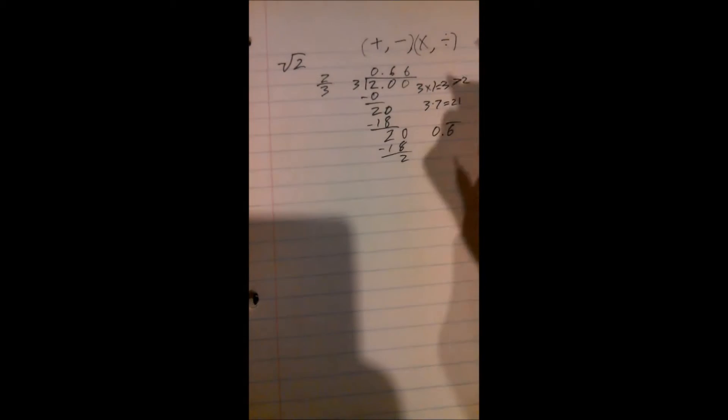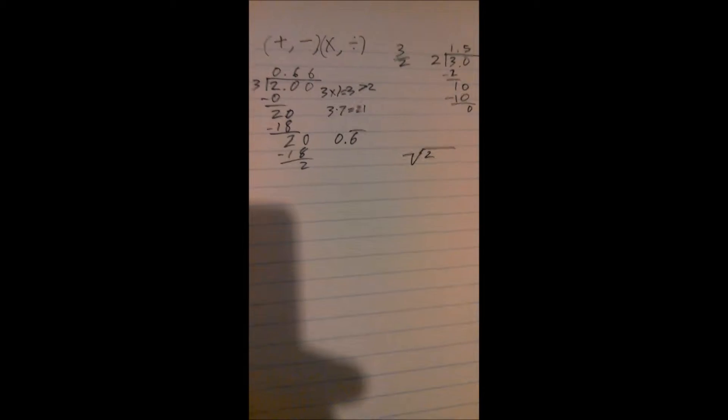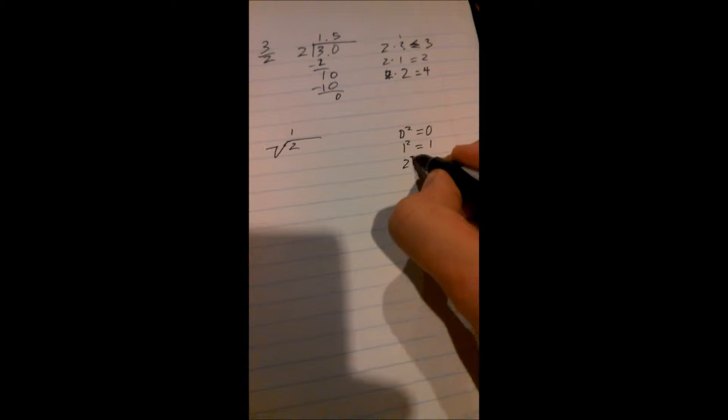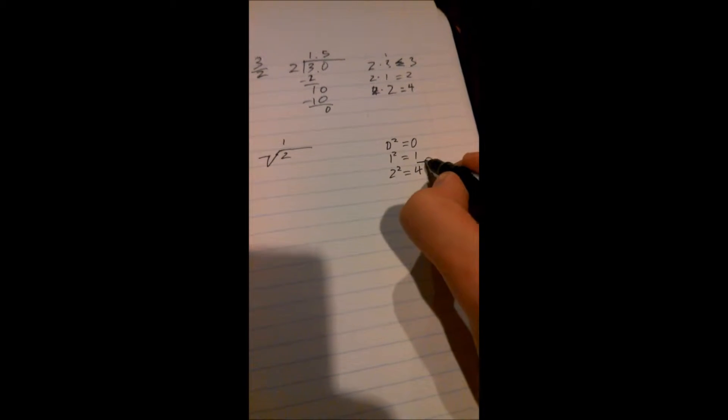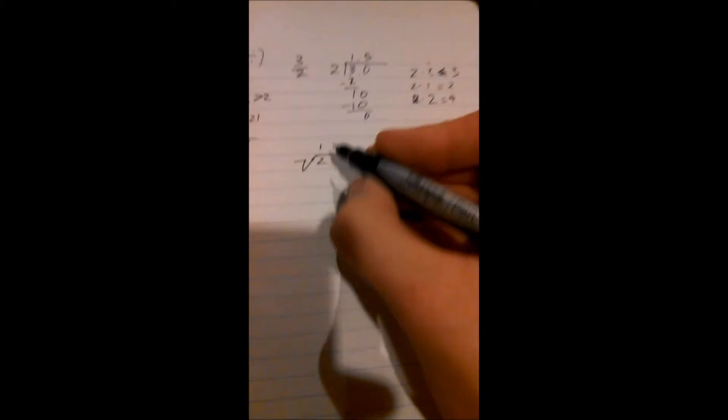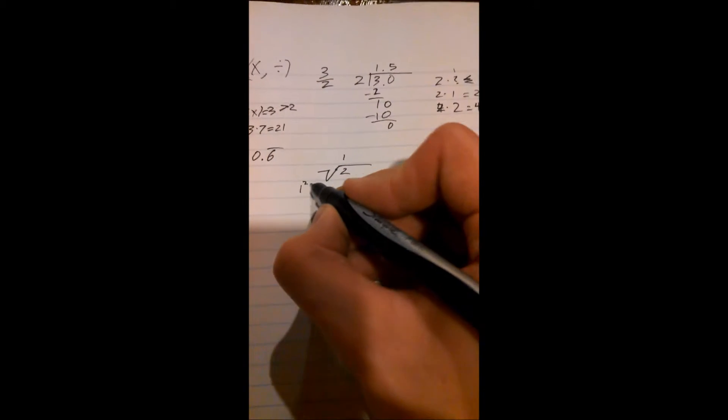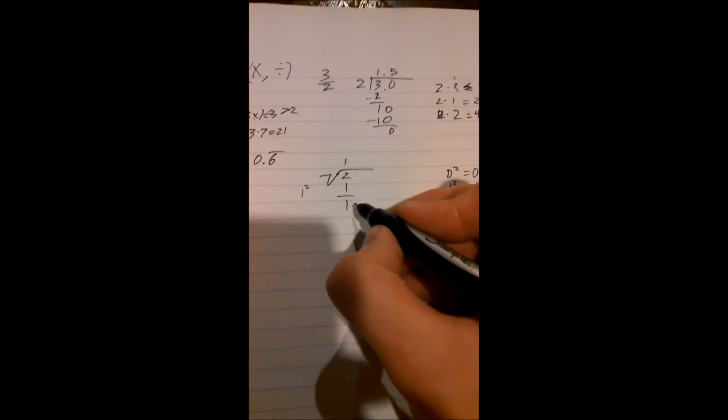So we'll do the same thing with square roots. So the opposite of a square root is a power. Square root of 2, 0 squared equals 0, 1 squared equals 1, and 2 squared equals 4. So 2 falls in between these two numbers. So we're going to go with the lesser one, 1. So we're going to plug in 1 at the top there. So 1 squared equals 1. We'll subtract that off. And that gives us a remainder of 1.